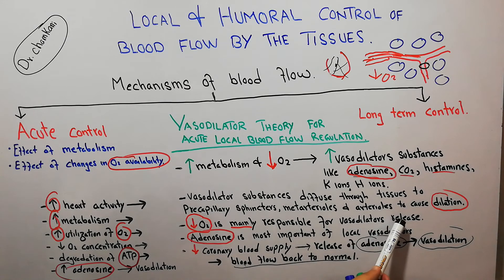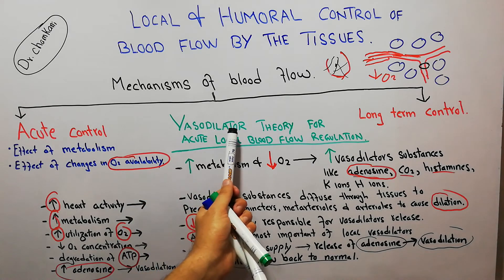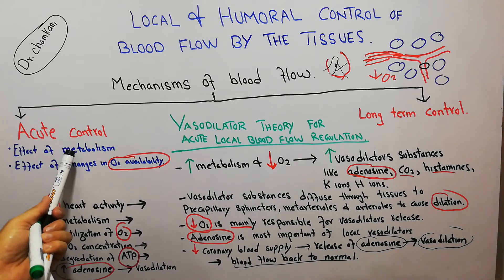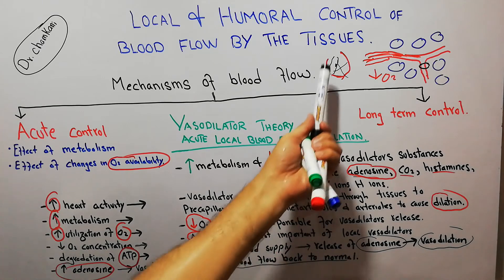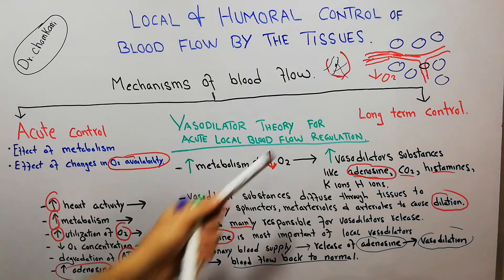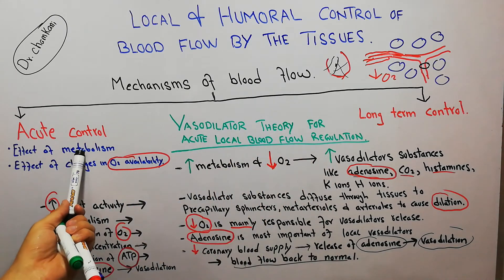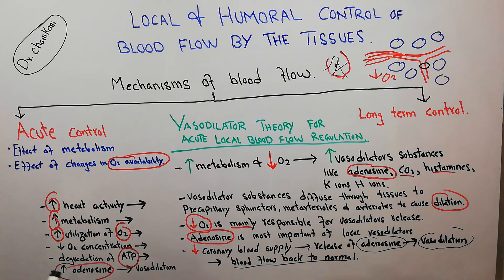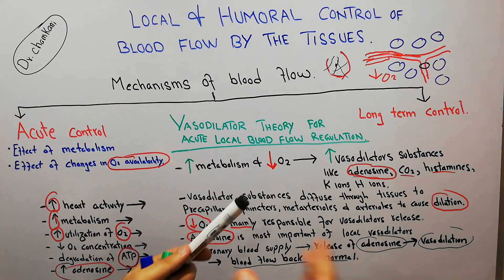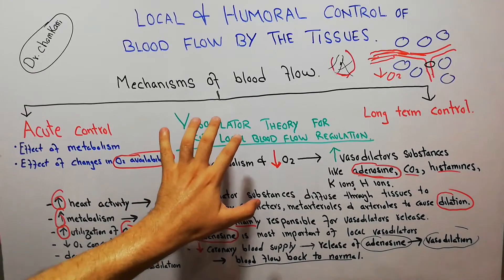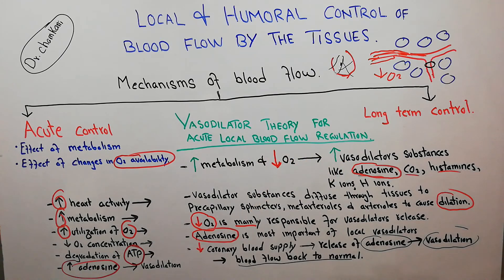In summary, two examples prove the vasodilator theory for acute control: if blood flow to the heart is decreased, adenosine is released, causing vasodilation and reverting blood flow to normal; if heart activity increases, high metabolism leads to increased oxygen utilization, degradation of adenosine triphosphate, increased adenosine, vasodilation, and normalization of blood flow. Decreased oxygen is mainly responsible for vasodilator release, and adenosine is the most important local vasodilator.